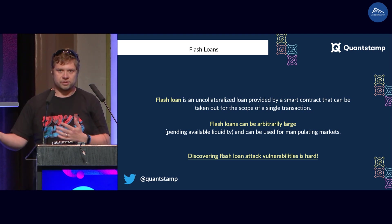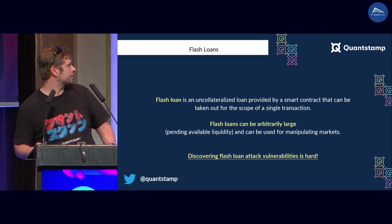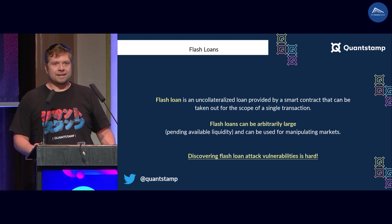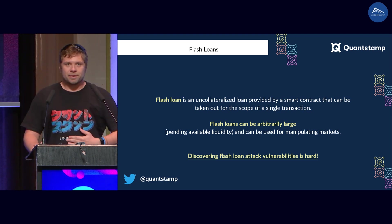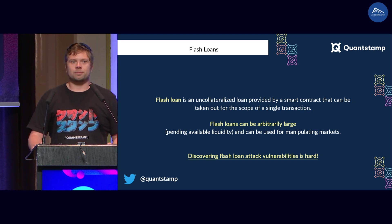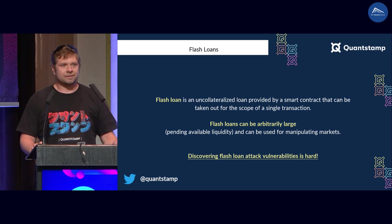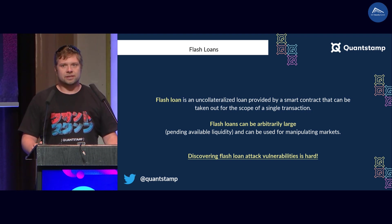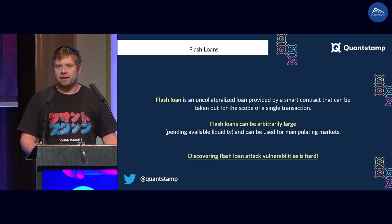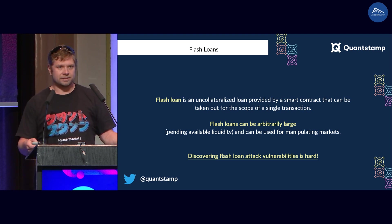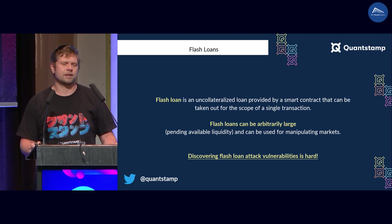The reason I'm able to show you that slide is that, unfortunately, due to the composability of DeFi, flash loan attacks and attack vectors are actually really hard to find.